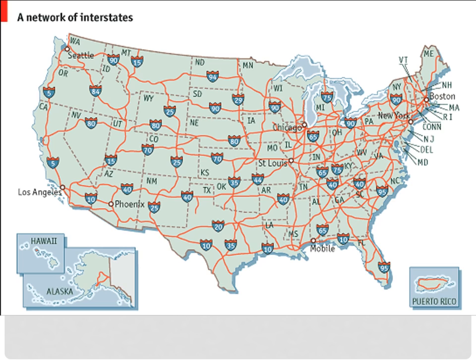The interstate highway system forms a grid-like network. Highways running east-west are numbered with even numbers, and those running north-south are numbered with odd numbers. For Las Vegas, the major highway is I-15, which runs predominantly north-south — from San Diego through Las Vegas, Utah, Salt Lake City, Idaho, and Montana.